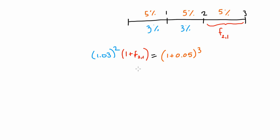So now it's just a little bit of algebra to find out that the forward rate two periods ahead that lasts for one period, that is this interest rate, we expect that forward rate F2,1 to be about 9.1%.